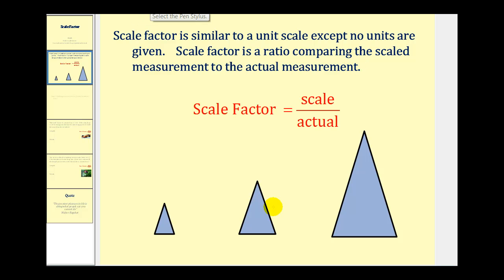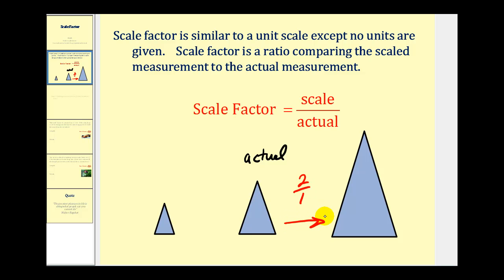For example, if we take a look at these triangles here, if the original or actual triangle was the one in the middle, and we had a scale factor of two, the ratio would be two to one, so the scaled triangle would be twice as large as the original, which would produce this larger triangle. Now if the scale factor was one-half, the scaled triangle would be half the size of the original, as we see here on the left.